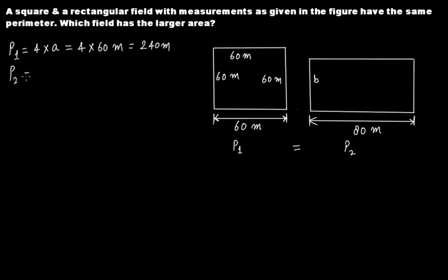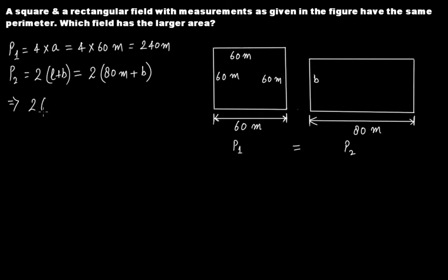P2 equals 2 times (length plus breadth). That is 2 times (80 meters plus B). Since P1 equals P2, we get 2 times (80 + B) equals 240 meters. Solving this gives B equals 40 meters.